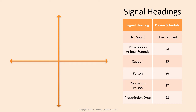Signal headings are the first thing you see on a chemical label and they are about personal safety, because personal safety is the first thing you should be worried about when using your chemical. Signal headings relate to the poison schedule and they're a plain English way to indicate to the chemical user how potentially dangerous the concentrated chemical is.